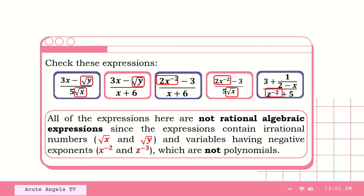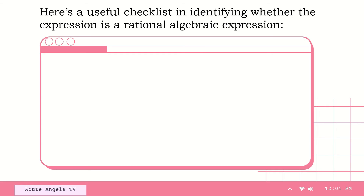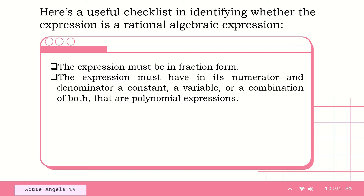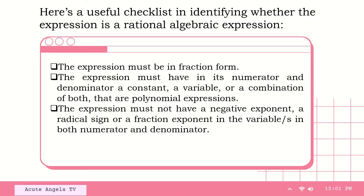Again, let us recall that a rational algebraic expression is a fraction containing polynomials in both numerator and denominator, provided that the denominator must not be equal to 0. The denominator cannot be 0 because division by 0 is undefined or meaningless. Here is a useful checklist: First, the expression must be in fraction form — in the form of p over q. Second, the expression must have in its numerator and denominator a constant, a variable, or a combination of both that are polynomial expressions. And third, the expression must not have a negative exponent, a radical sign, or a fraction exponent in the variables.